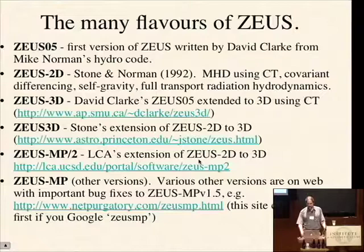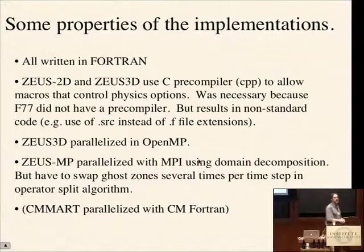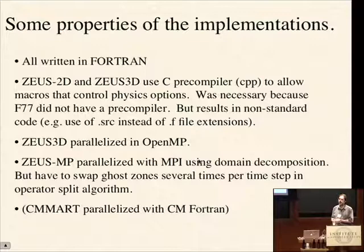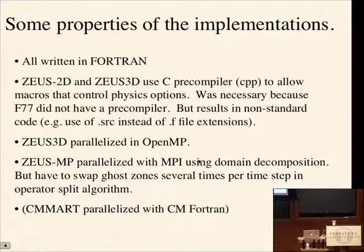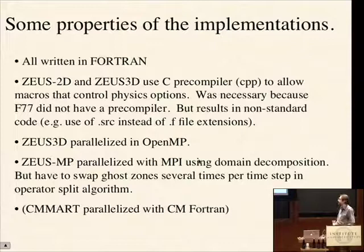Full disclosure: the versions I wrote used a C preprocessor to allow macros that control the physics — gravity, MHD, hydro, different coordinates. The easiest way to turn these on and off is to use ifdefs using CPP macros. Fortran 77 didn't have a preprocessor or macros, so we used CPP to turn the Fortran source into something specific to the problem at hand. It results in non-standard code with .src file extensions instead of .f. I would never do this today — I'd use a modern language that allows these macros. At the time there wasn't a better way in Fortran.